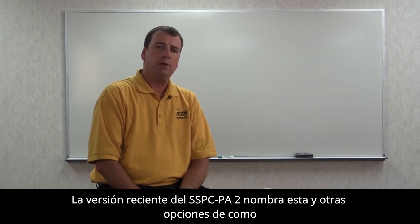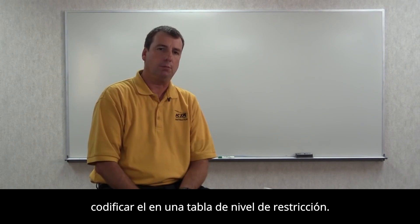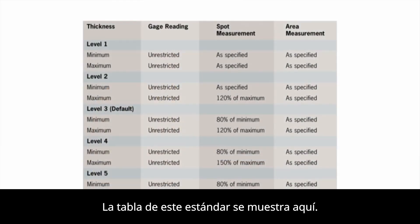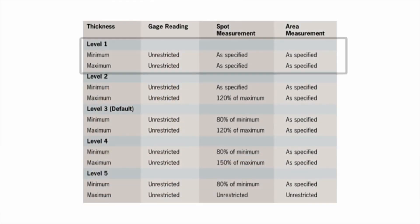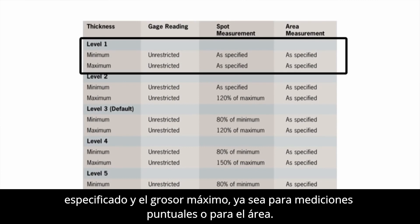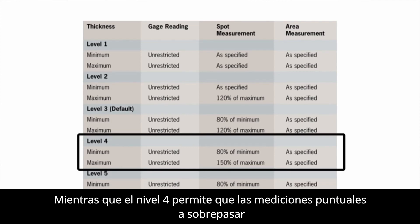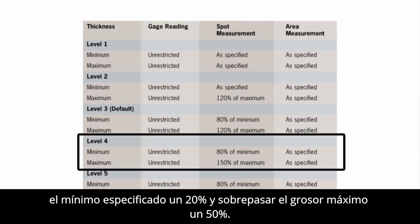The most recent version of SSPCPA2 addresses this and other options in a coating thickness restriction level table, shown here. Level 1 is the most restrictive and does not allow any deviation from the specified minimum and maximum thickness for either spot or area measurements, while level 4 allows spot measurements to underrun the specified minimum by 20% and overrun the maximum thickness by 50%.